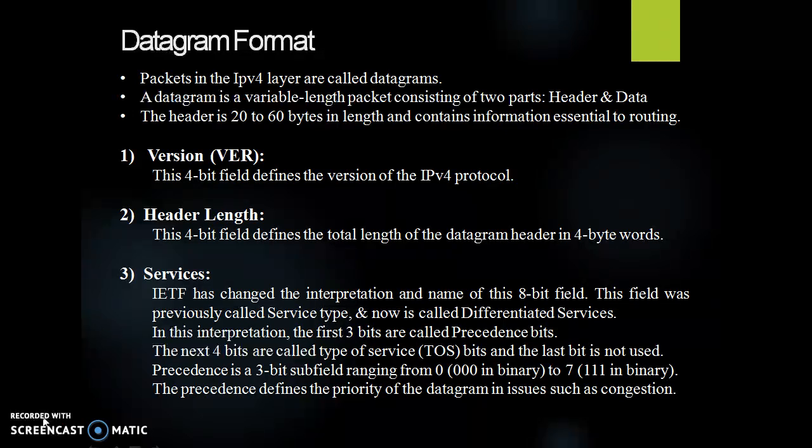Next is services. IETF has changed the interpretation and name of this 8-bit field. This field was previously called service type and now it is called differentiated services. In this interpretation, the first 3 bits are precedence and the next 4 bits are called type of services TOS bits, and the last bit is not used.